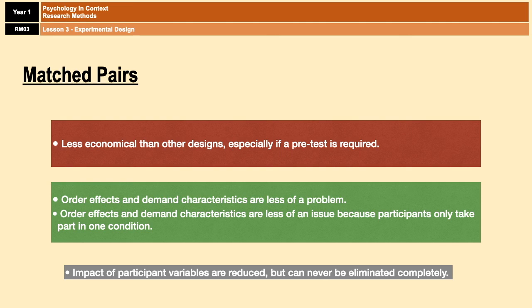Bear in mind I've given you a lot of evaluation points here, but in research methods you're never going to need to write a full flowing paragraph — there are only ever going to be two markers, so knowing one or two evaluation points per design is fine. The content in this video is incredibly popular in exams, particularly in paper two — identifying the experimental design, explaining your answer, giving a strength or limitation, and sometimes suggesting why a different design may be better. So make sure you know your stuff for experimental designs.